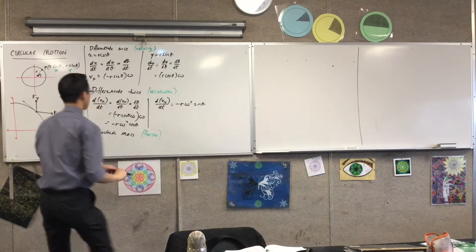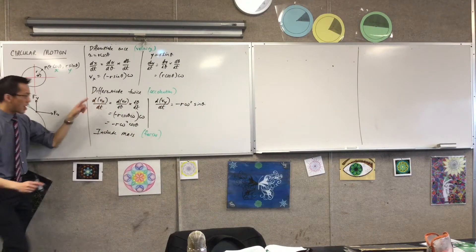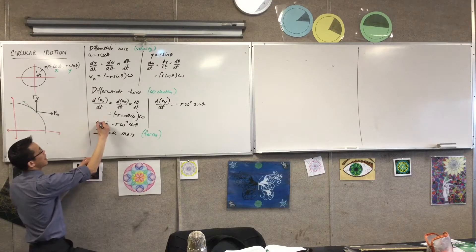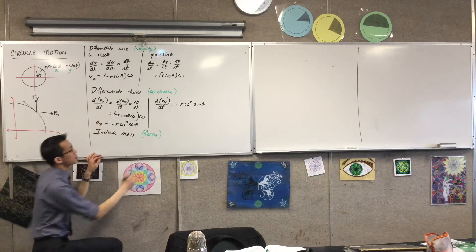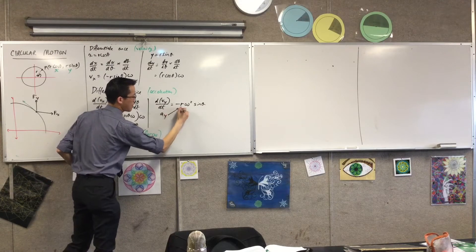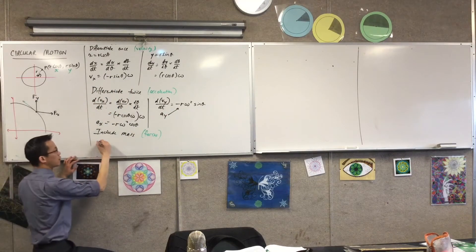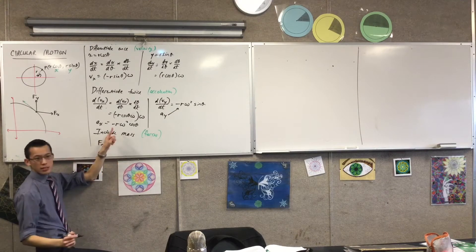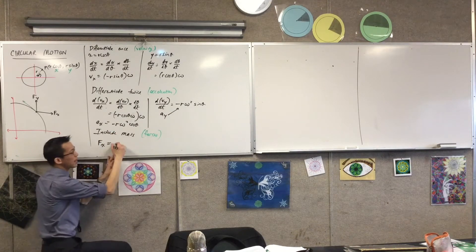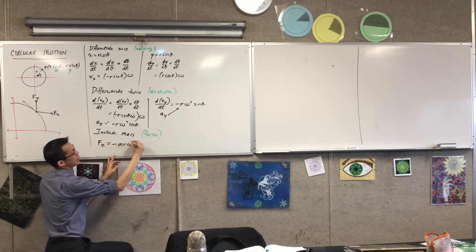Okay, so for this guy over here, right, this is the acceleration for x and this guy over here is the acceleration for y. Just as we said, the force, so I've got a horizontal force. It's just this with mass included, right? All I have to do is multiply by mass. So that gives you this.